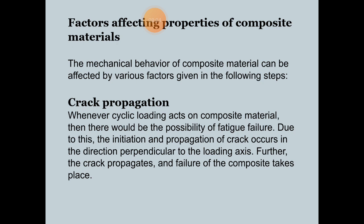Next are the factors affecting the properties of composite materials. The mechanical behavior of composite materials can be affected by various factors. The first factor is crack propagation. When cyclic loading acts on composite materials, there is a possibility of fatigue failure. Due to this, the initiation and propagation of cracks occur in the direction perpendicular to the loading axis, and eventually the cracks propagate until failure of the composite takes place.